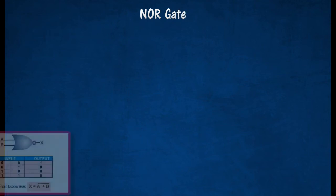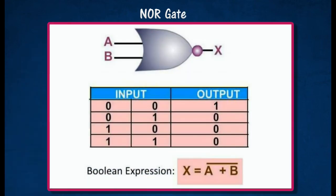The NOT OR gate is a combination OR gate followed by an inverter. Its output is true if both inputs are false. Otherwise, the output is false.